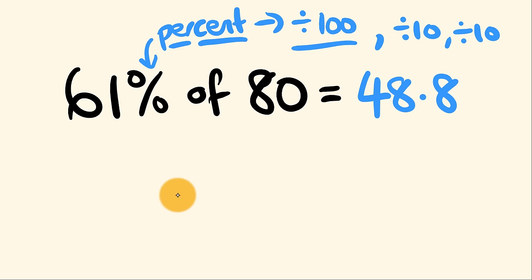61% of 80, what we're going to do to start off with is we're going to work out this percentage part by dividing by 10 two times. And we're going to do it across our equation. First off, we have 80, and we're going to divide this by 10. 80 divided by 10, this is equal to 8.